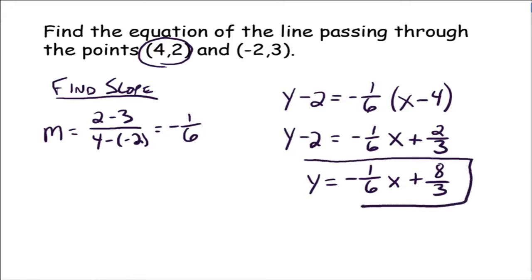If you were to graph this line, it would pass through the points (4, 2) and (-2, 3). We also know immediately what the y-intercept is — it would be (0, 8 thirds) — because it's in slope-intercept form. In order to find the equation of a line, you must know the slope of the line.